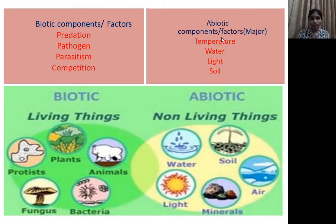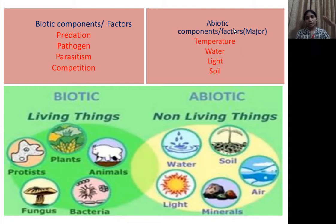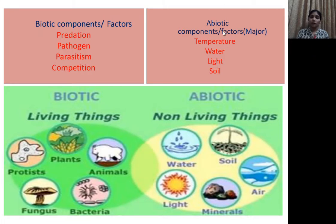Next is the abiotic factor, which consists of temperature, water, light, and so on. These factors also affect living organisms. If the temperature or concentration of these factors increases or decreases, living organisms still need to adjust and tolerate them. How living organisms adjust within abiotic and biotic factors is what we study here.